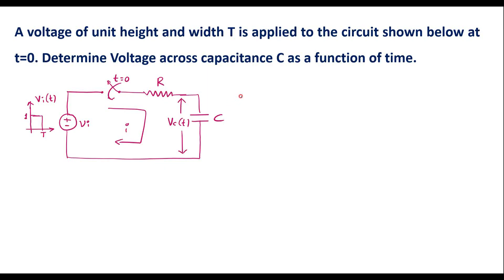In this video we consider one example on an RC circuit. A voltage of unit height and width τ is applied to the circuit shown below at t equal to 0. We need to determine the voltage across capacitance C as a function of time. The input signal is Vi(t) having magnitude 1 and width τ, and at t equal to 0 the switch will close. We are required to find the voltage across the capacitor, Vc(t).